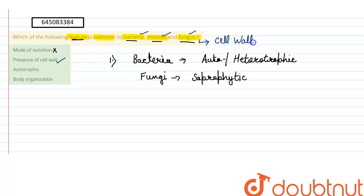Third one is autotrophic mode of nutrition. This would also be wrong—as we discussed, bacteria can be autotrophic but fungi are not autotrophic, so this is a wrong option.